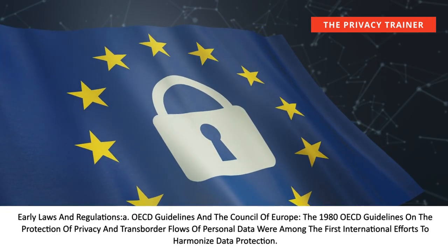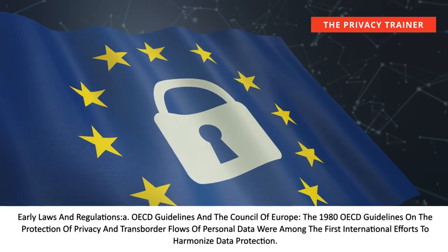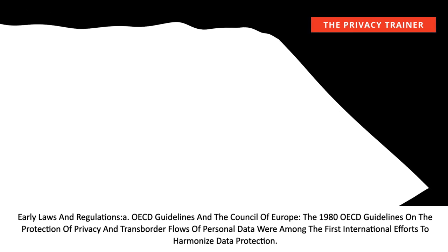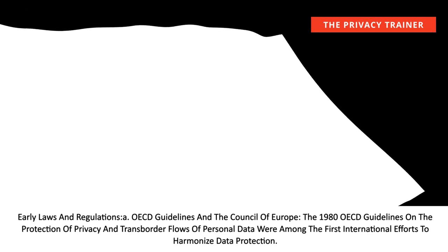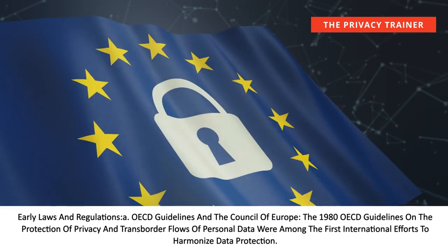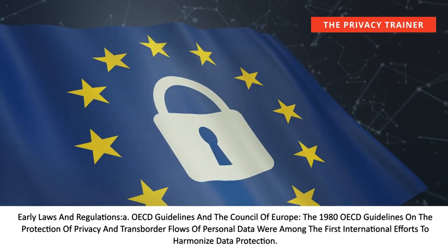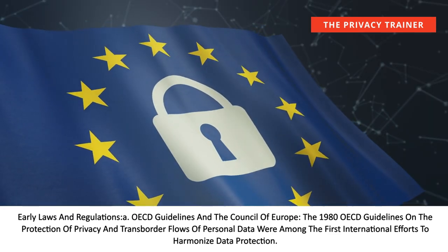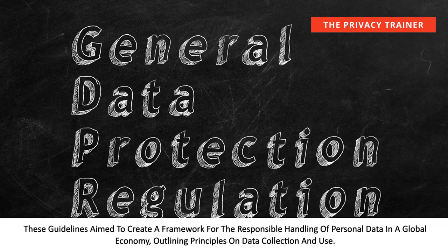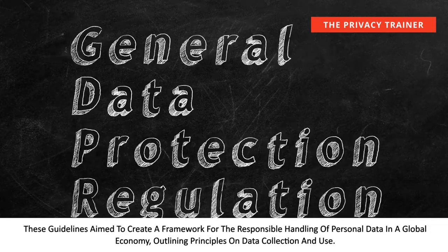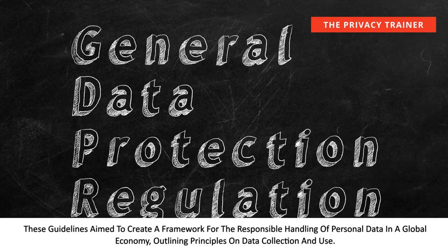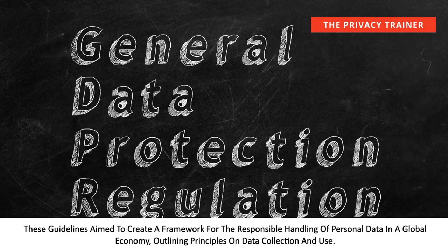Early laws and regulations: the OECD guidelines and the Council of Europe. The 1980 OECD guidelines on the protection of privacy and transborder flows of personal data were among the first international efforts to harmonise data protection. These guidelines aimed to create a framework for the responsible handling of personal data in a global economy, outlining principles on data collection and use.